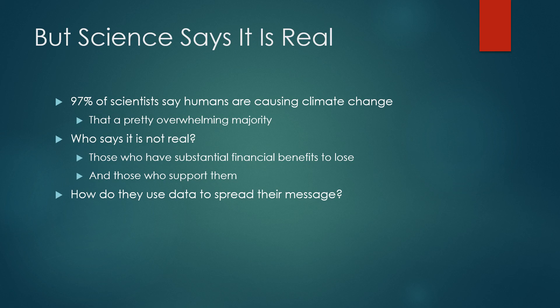Science says it's real: 97% of scientists in the world say that humans are causing climate change — a pretty overwhelming majority. What's more important is that of those 97%, they're scientists conducting independent studies, independent of each other. There are government agencies and ministries that have agreed, and the United Nations Intergovernmental Panel on Climate Change has done a tremendous amount of work and says this is a problem. But who says it isn't real? Those who have substantial financial benefits to lose. In our particular case, we're looking at oil companies, coal companies, financial companies tied to the oil industry — banks and finance companies — and the politicians supported by those companies.